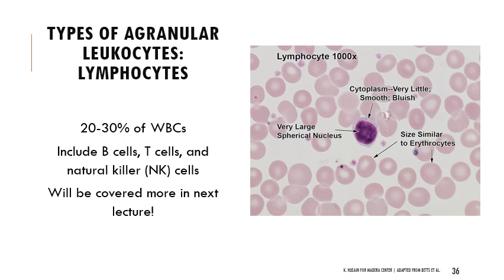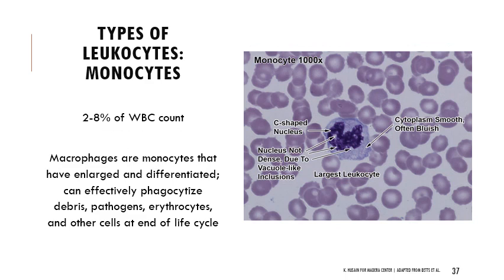The agranular leukocytes include lymphocytes, about 20 to 30 percent of white blood cells, including B cells, T cells, and NK cells — natural killer cells — which we'll cover more in the next lecture. Monocytes are about 2 to 8 percent of white blood cells. Macrophages are monocytes that have differentiated, and there are also many other phagocytotic cells that are not technically macrophages. Macrophages are very effective at phagocytosis and can consume and break down debris, pathogens, old red blood cells, and other cells at the end of their life cycle.